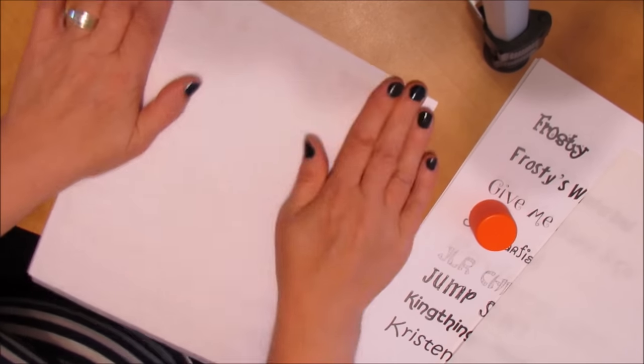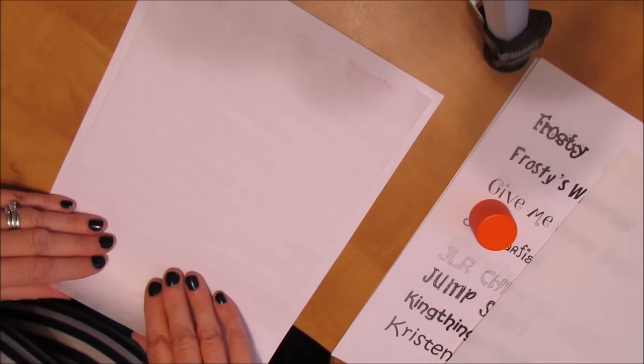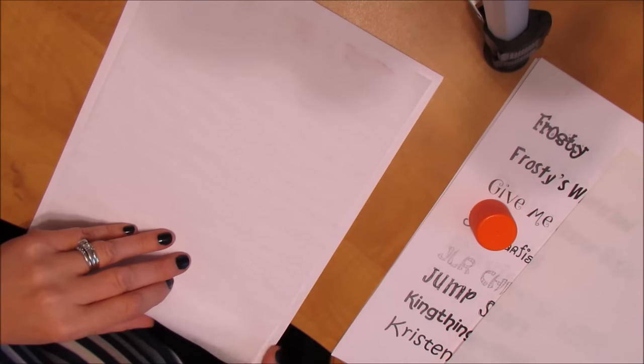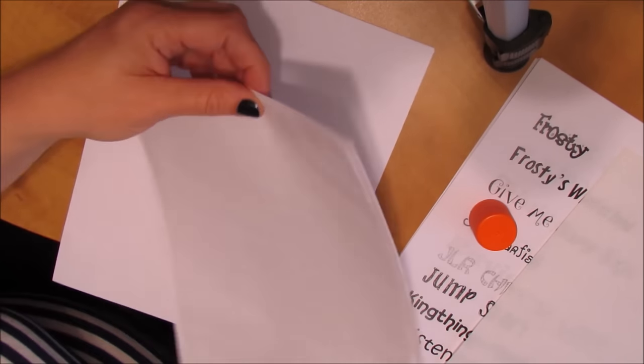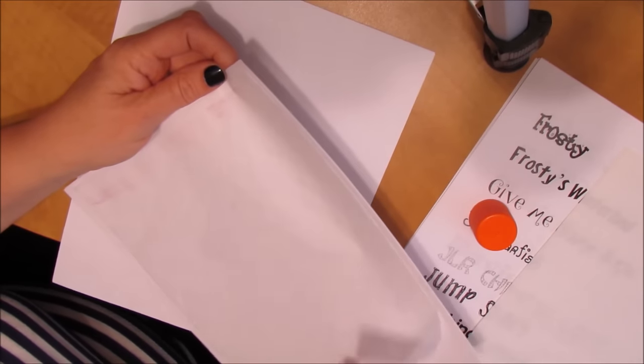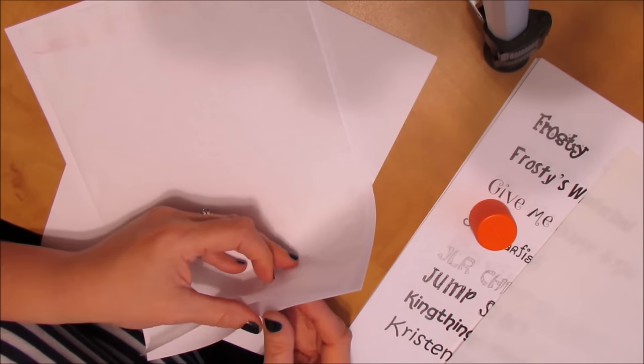You don't want any ripples or anything. And then you feed it into the paper tray. Now you can only do this one sheet at a time.